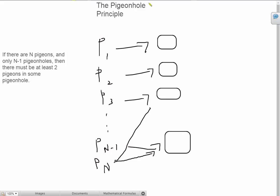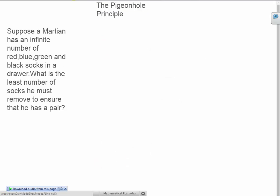Now let's look at a few examples. Okay, so here's the question. Suppose a Martian has an infinite number of red, blue, green, and black socks in a drawer. What is the least number of socks he must remove to ensure that he has a pair?